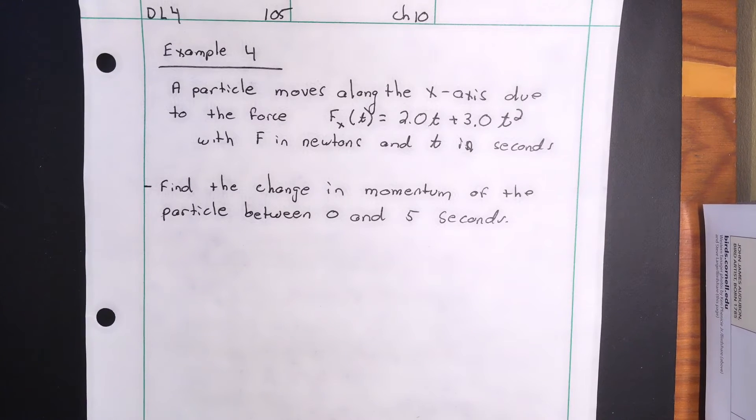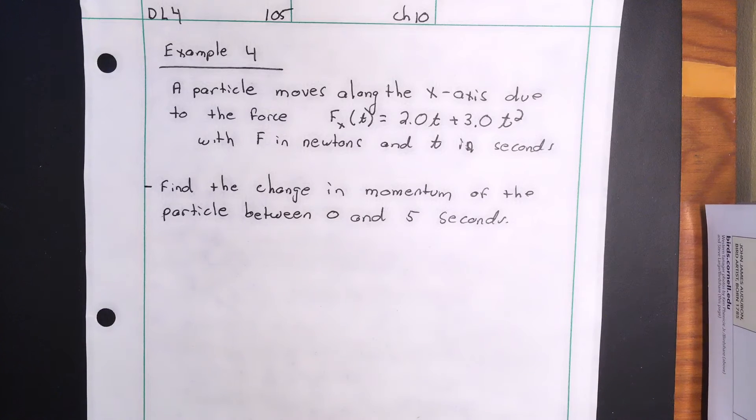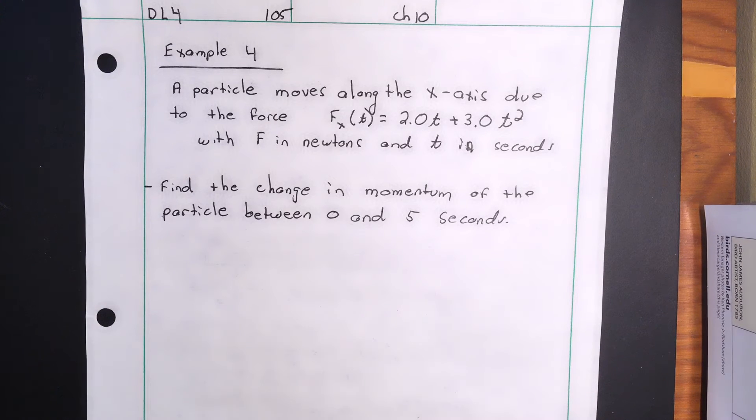Okay, example four. Here we have a particle that moves along the x-axis due to a force given by this expression. We're to find the change of momentum of the particle between zero and five seconds.